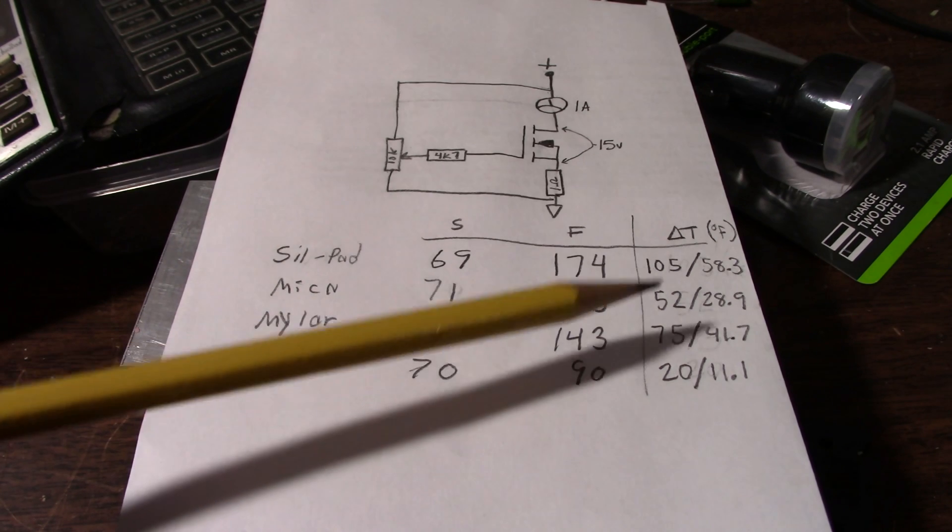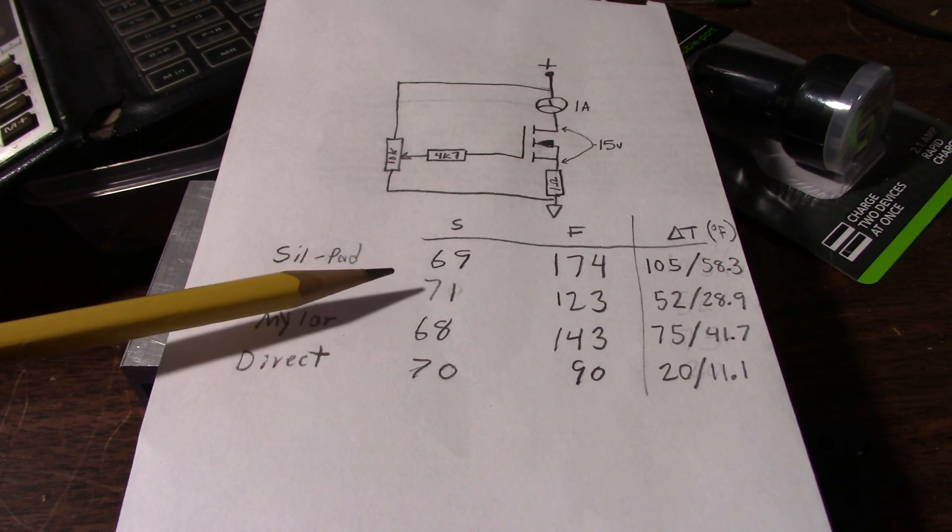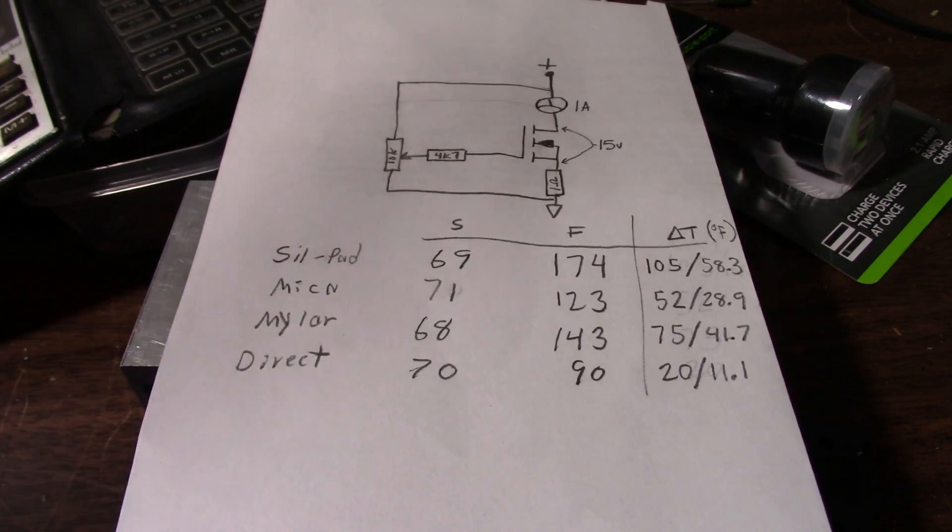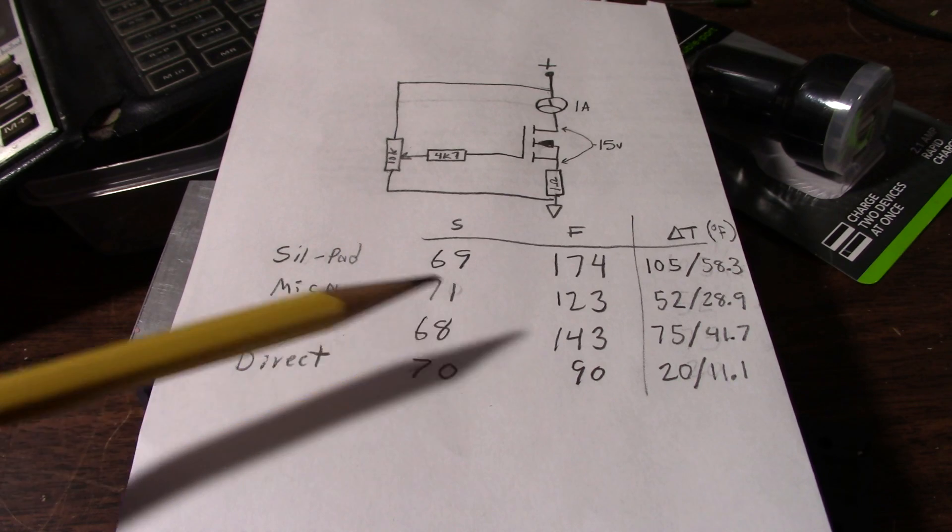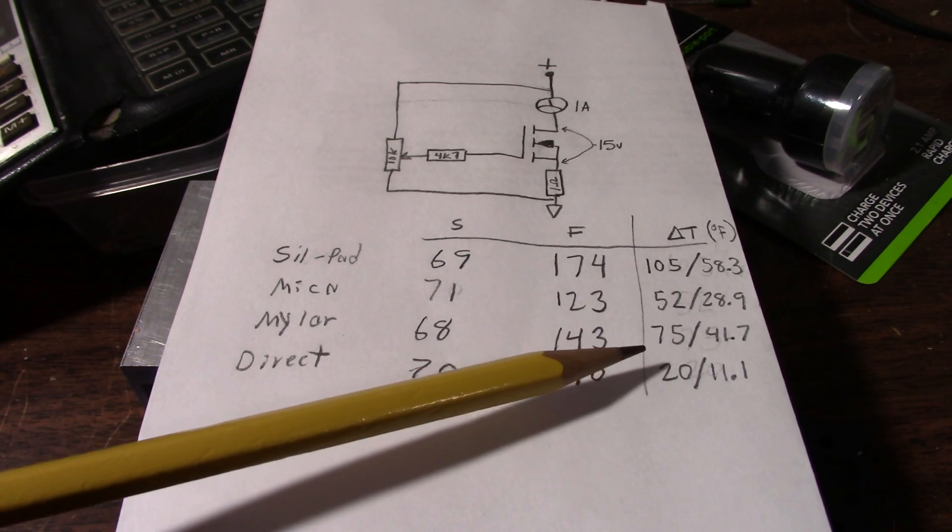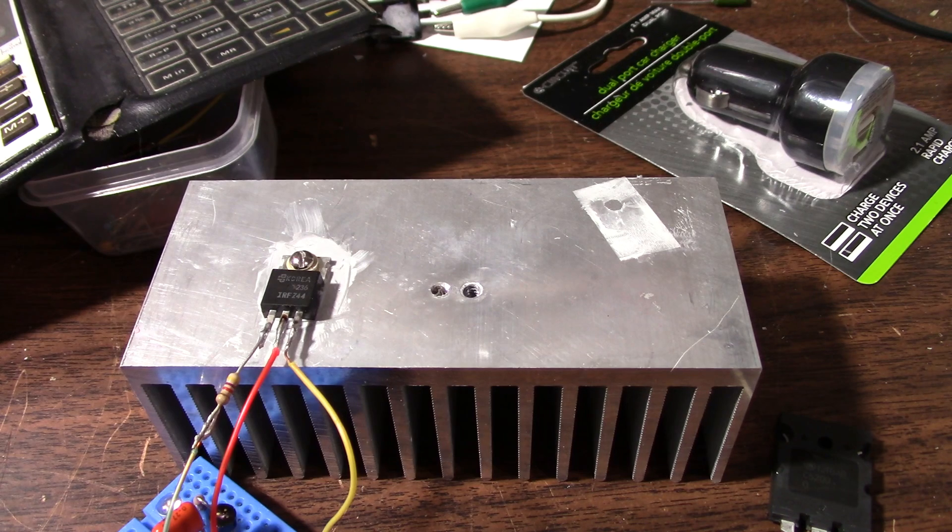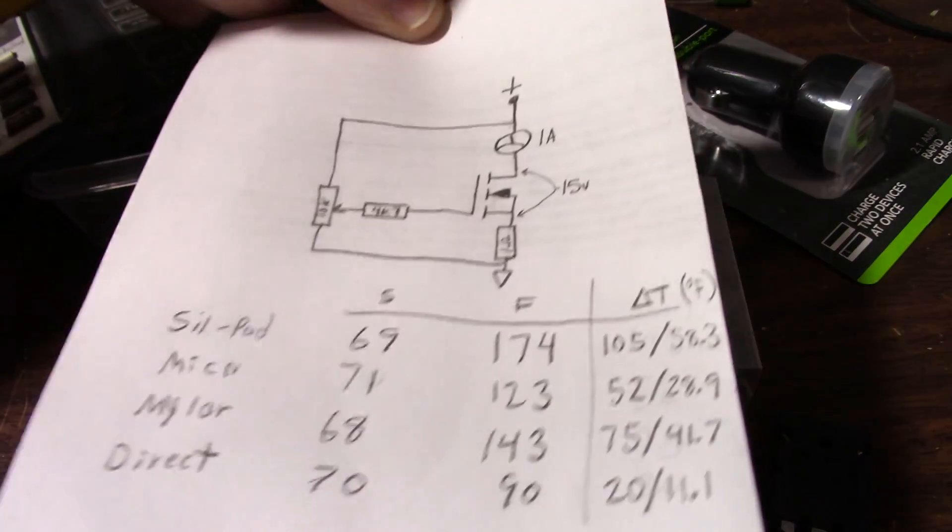Against the Mylar which was 75 or 41.7. Now the Mica I measured with my micrometer was 2.5 mils thick, which is thousandths of an inch. The Mylar is 2 mils, so it does have a thinner advantage for conducting heat. However, the Mica is 0.71 watts per meter Kelvin whereas the Mylar is much lower, 0.14. So that's why the Mica did much better.